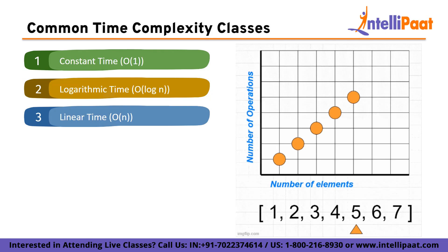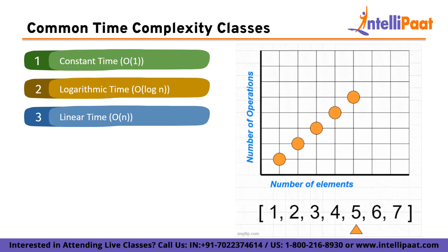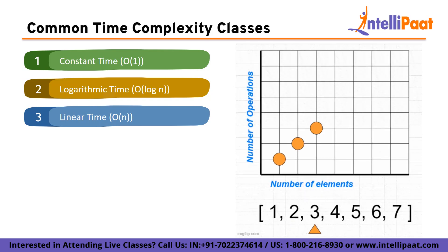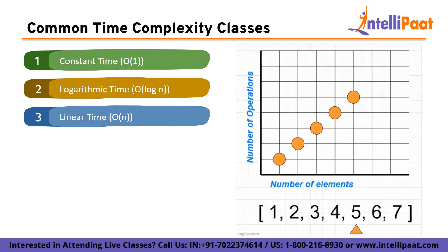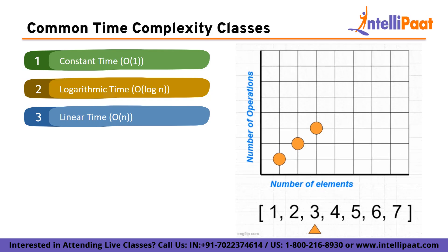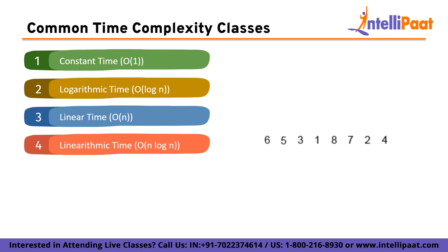Next is linear time, with O(n) complexity. Algorithms with linear time complexity have a runtime directly proportional to the input size. These algorithms perform a constant amount of work for each input element. Examples include iterating over an array or list, summing all elements, or searching for a specific element in an unsorted list.